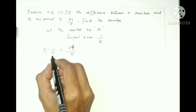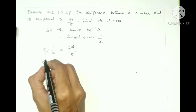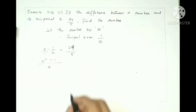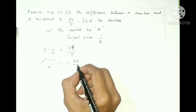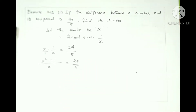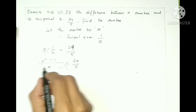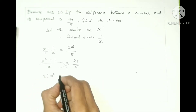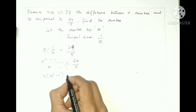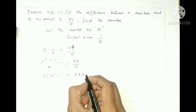This is cross multiplication. So x squared minus 1, which is equals to 24 by 5. So 5 into x squared minus 1 is equals to 24x.